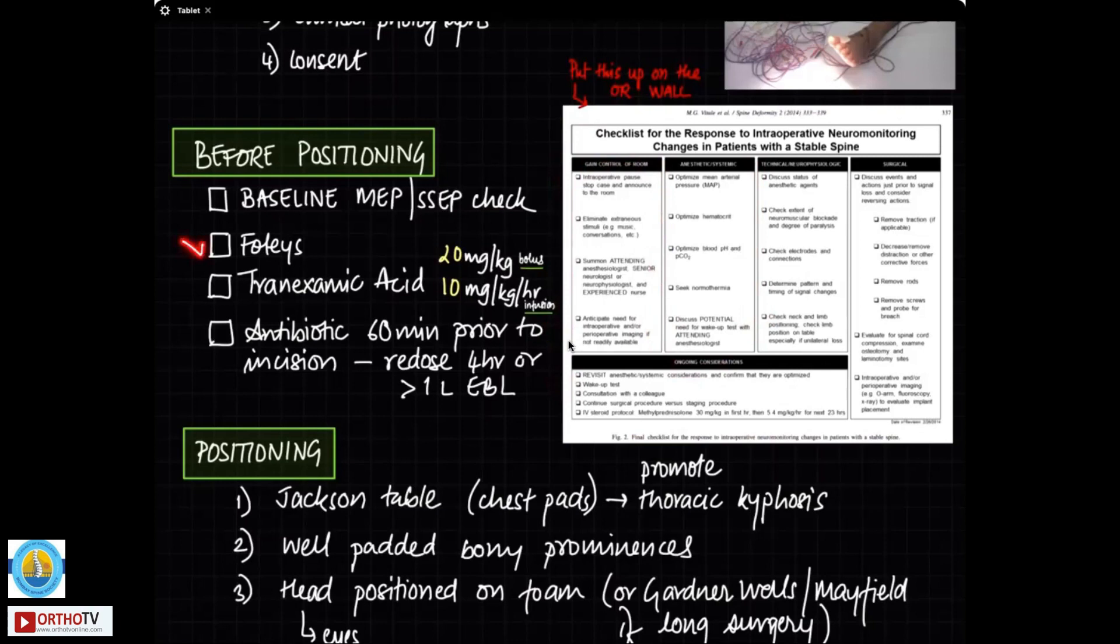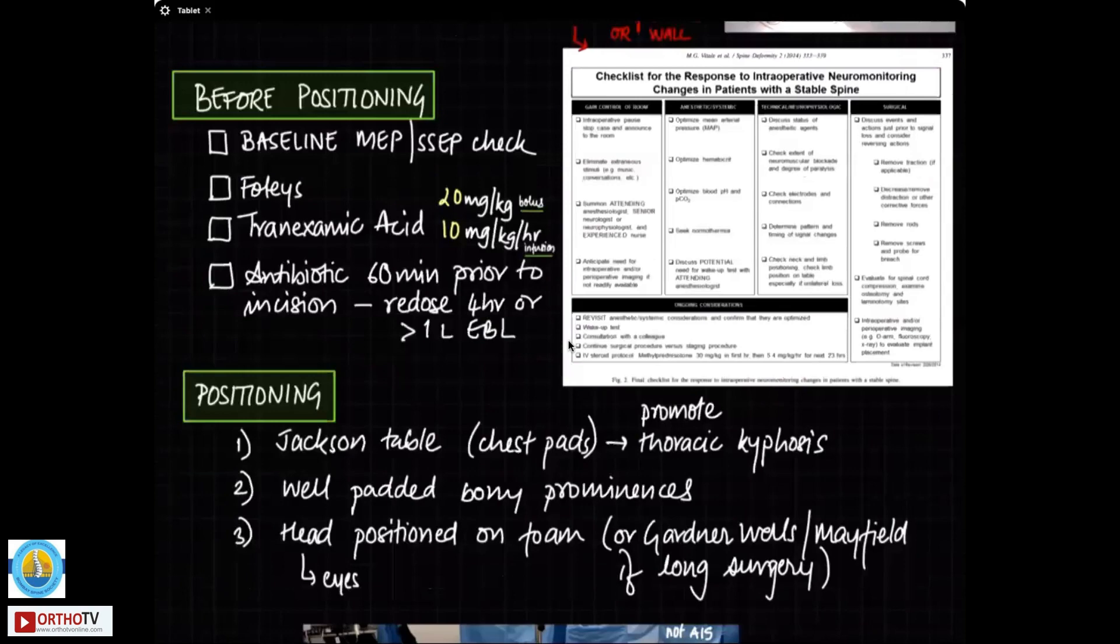These patients are catheterized. I usually start these patients on tranexamic acid, which is 20 mg per kg bolus and then 10 mg per kg per hour infusion continues throughout the surgery. Antibiotics are given according to the protocol. And if it's a long surgery, you redose at four hours or after one liter of blood loss.